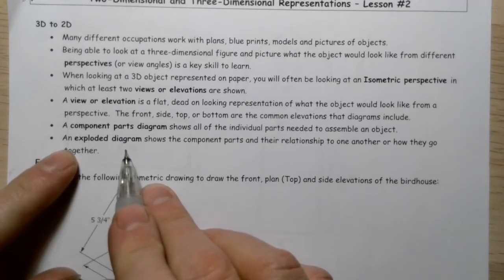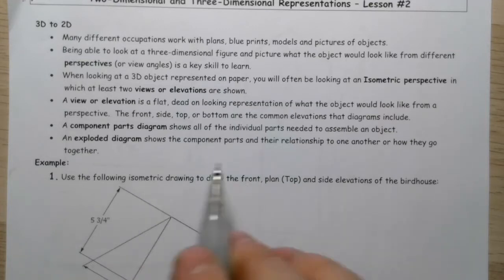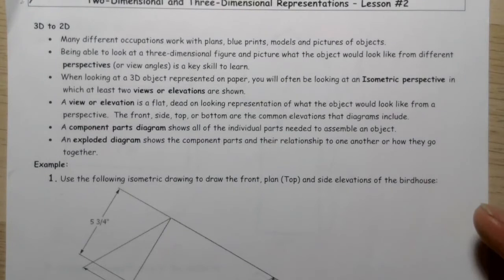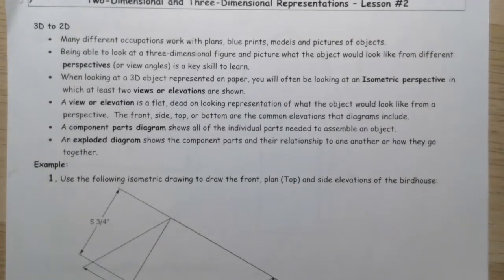An exploded diagram is the object with the parts separated, but in the same relative location that they need to be in to create the object when you put them together. You've probably seen these sort of exploded diagrams in Lego instructions — sometimes they show you the pieces need to go together in a certain way, but they're separated in the diagram. Let's take a look at this example of the birdhouse and the different ways we can represent it.